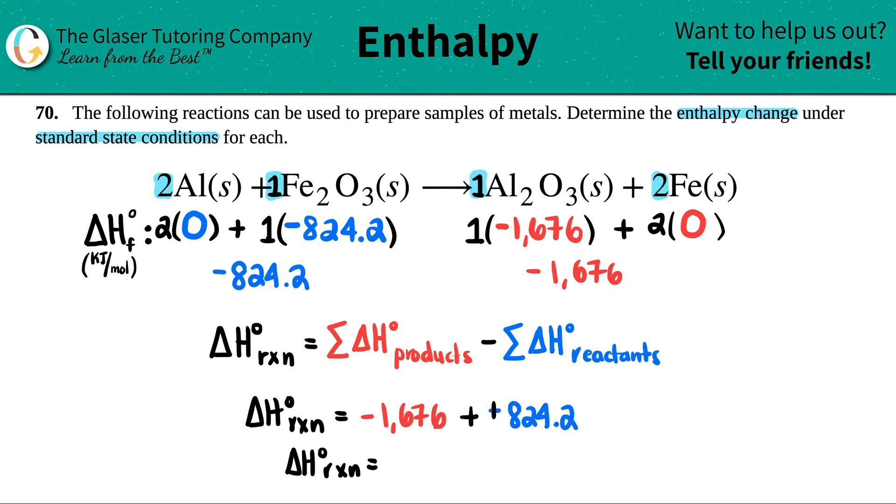So big, big exothermic. Negative 851.8. Whoa. I know it's exothermic because it's a negative. That means that we're releasing heat. The units for delta H standard is kilojoule per mole. So I'm just going to attach that at the end. And now, in order for this reaction to happen, we will release 851.8 kilojoules per mole. That's a lot of heat.